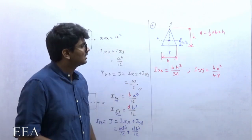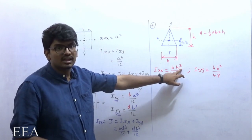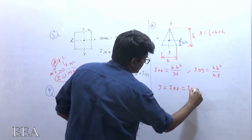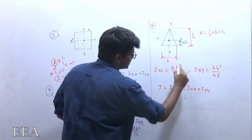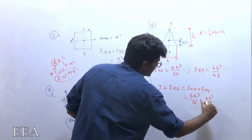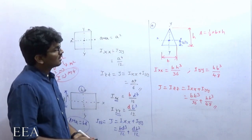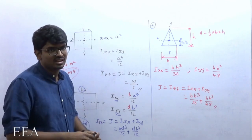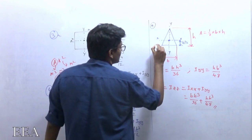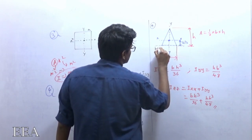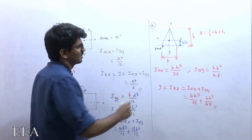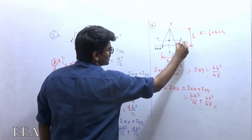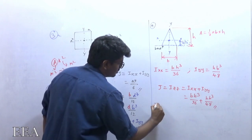The polar moment of inertia for the triangle is J = Ixx + Iyy = b·h³/36 + h·b³/48. Now, to find the moment of inertia about the base of the triangle: the base axis is parallel to the centroidal XX axis, at a distance h/3 away.